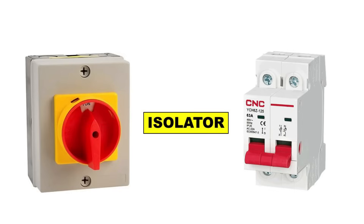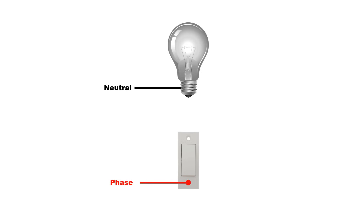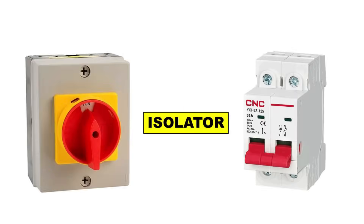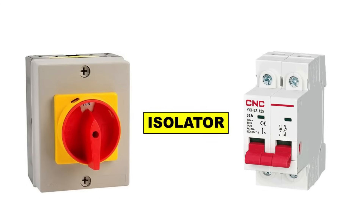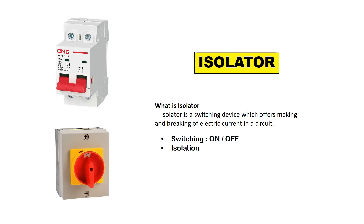First of all I am discussing about Isolator. Isolator is just only a type of switch. In your home, to turn on and off a bulb, you use a switch — same as that switch is your Isolator. You will not get any kind of protection through this Isolator. The only work of Isolator is to turn on and off the power supply.